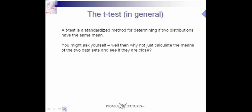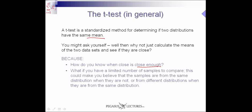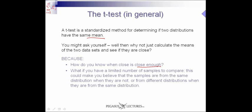Well, you might ask yourself, why not just calculate the means of two data sets and see if they are close enough, if what we're really trying to do is say if they have the same mean? Well, the answer to that question is quite simple: how do you know when close is close enough? And another problem — what if you have a limited number of samples to compare? What could happen is you could end up believing that the two distributions are the same when they're really not. They're actually from different distributions, but they appear to be from the same distribution because you have limited data.